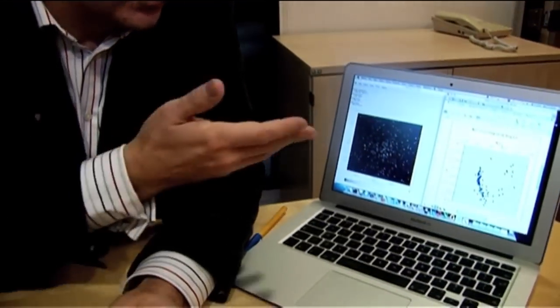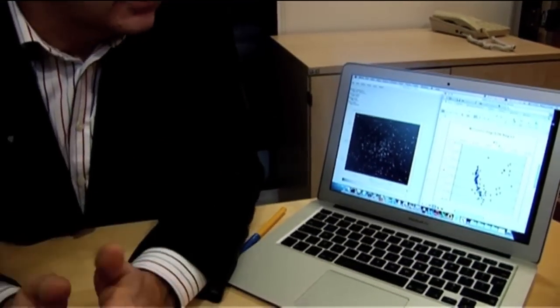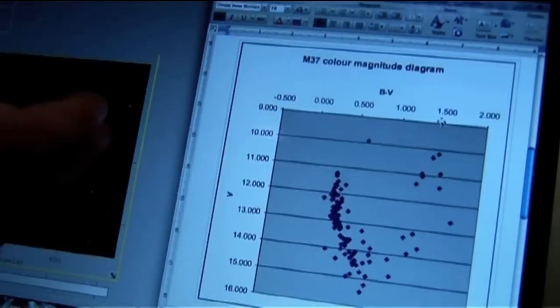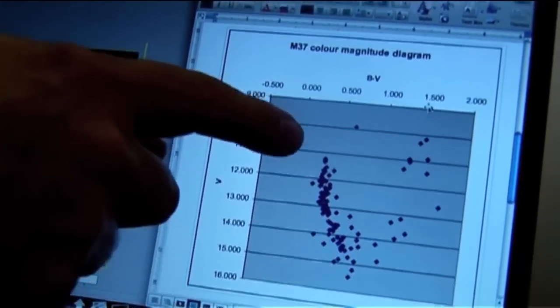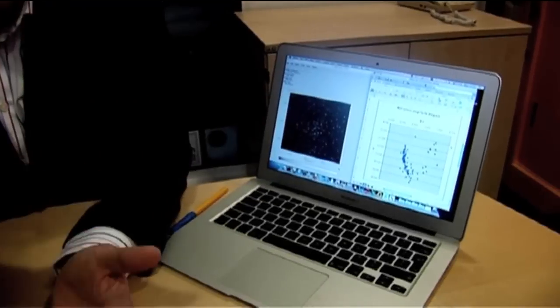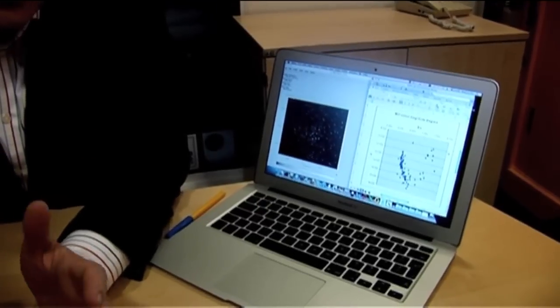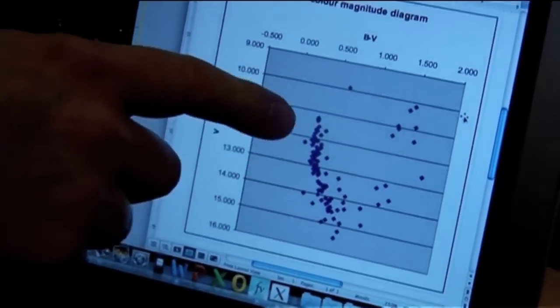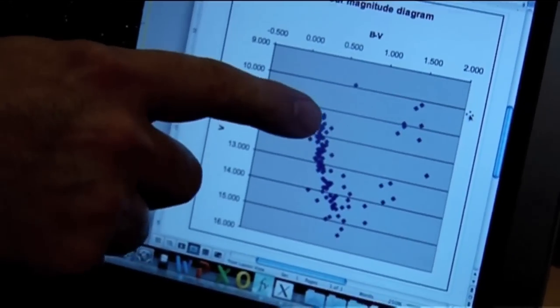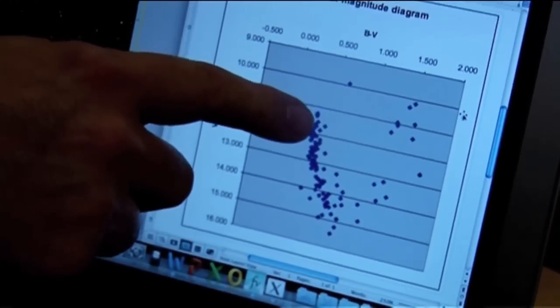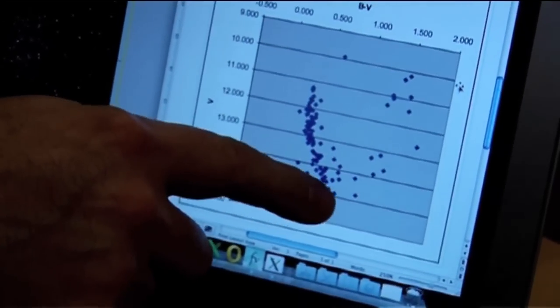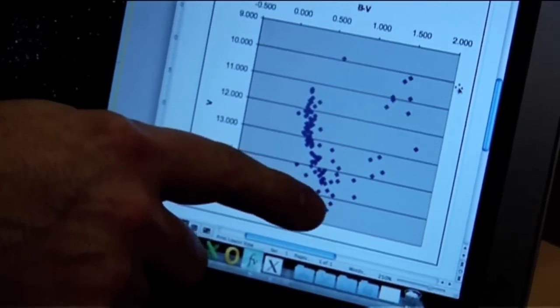Having measured the brightness of each star and the color of each star, we can plot those things on a graph. We call it a color magnitude diagram. And what you see is that most of the stars in this cluster lie along a single track here. We call that the main sequence. And what that is, is the region of the color magnitude diagram where stars spend most of their lives. It's where they sit when they're undergoing hydrogen fusion into helium in their cores. At the top of the main sequence we have the most massive stars, and they're the brightest and hottest. Down at the bottom of the main sequence we have the low mass stars, and they're the faintest and coolest.